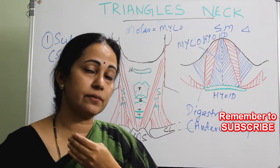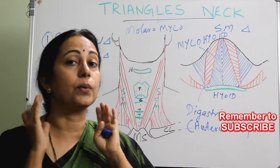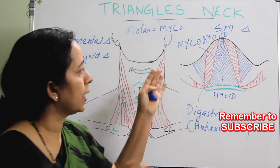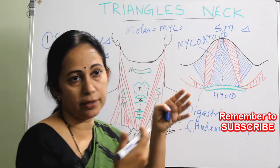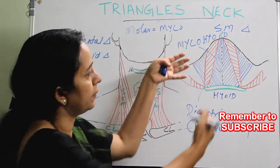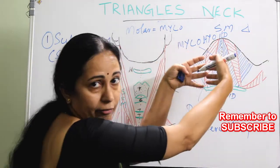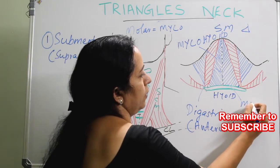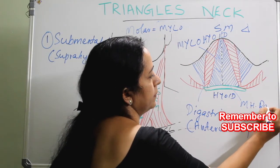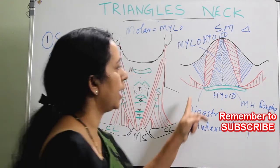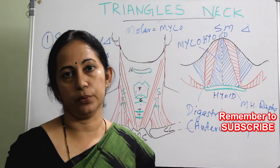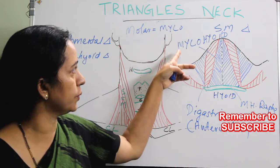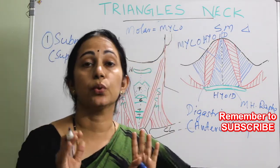There are actually two mylohyoid muscles on both sides. They are flattened triangular muscles that come together and attach to a median raphe called the mylohyoid raphe, and also to the body of the hyoid bone. So the mylohyoid muscle runs from the mandible to the hyoid bone.